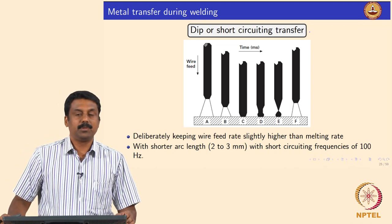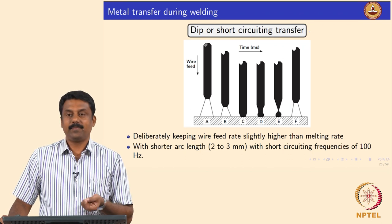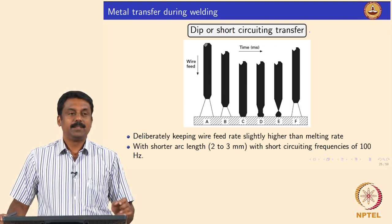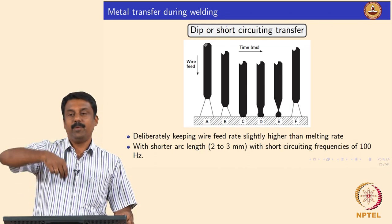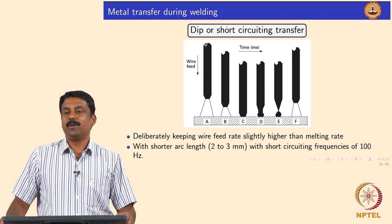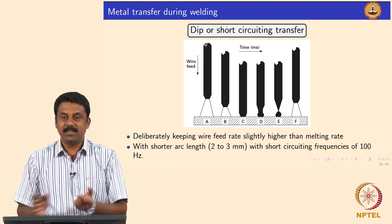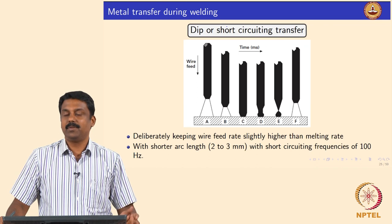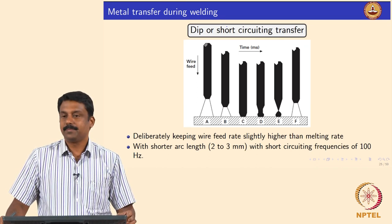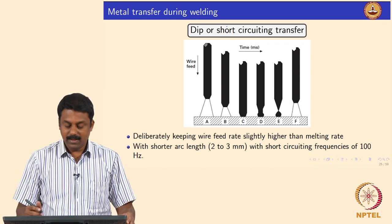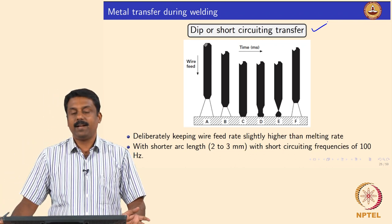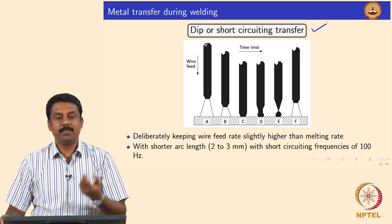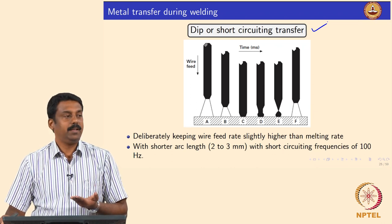Another mode of transfer is dip transfer. So far we looked at free flight transfers, and you can also achieve a stable transfer by dip. You can touch the droplet once it forms onto the pool, and when you pull it back, you change the force balances. You can overcome the surface tension because the liquid pool surface tension ensures the droplet is detached. This kind of transfer is a dip transfer or short-circuiting transfer, and it is part of non-free-flight transfer. There are a lot of advantages to having a short-circuiting transfer.